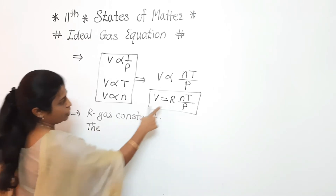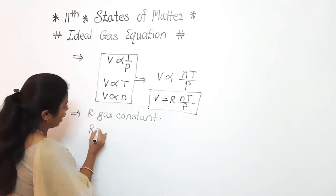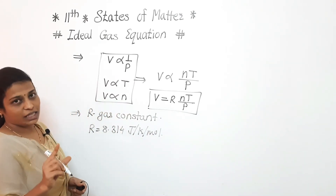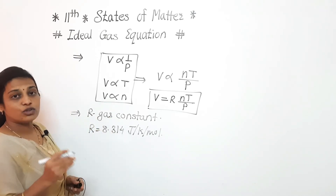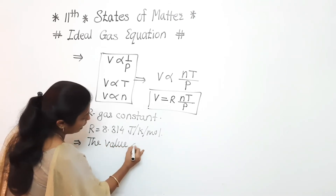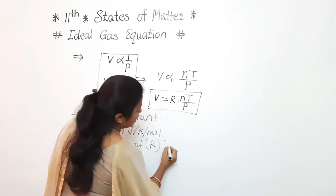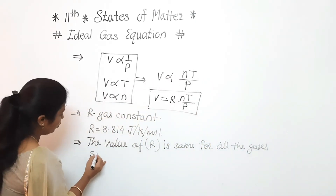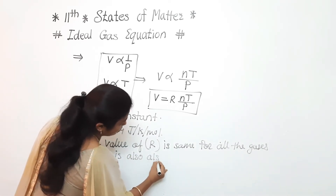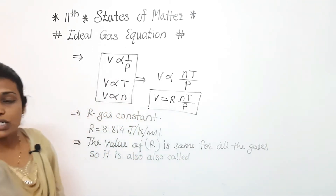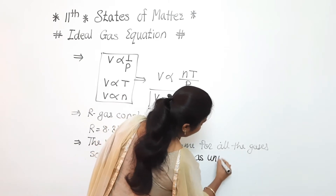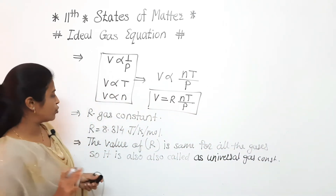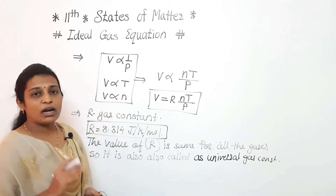The value of R is 8.314 joule per kelvin per mole. This constant value is the same for all gases. That's why this gas constant is also called the universal gas constant. So we have completed the starting part of the ideal gas equation.